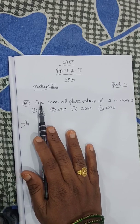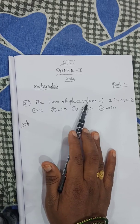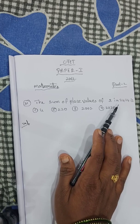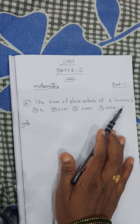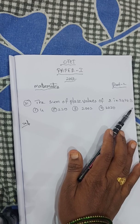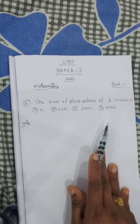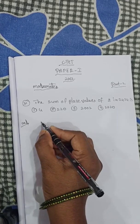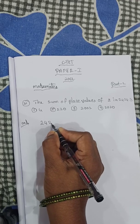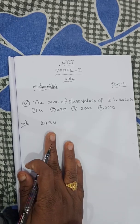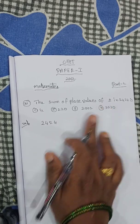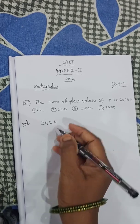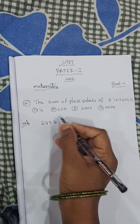Question 31: The sum of place values of 2 in 2424. Here, observe that there are two 2s. First, write the number 2424 and find the place value of 2.